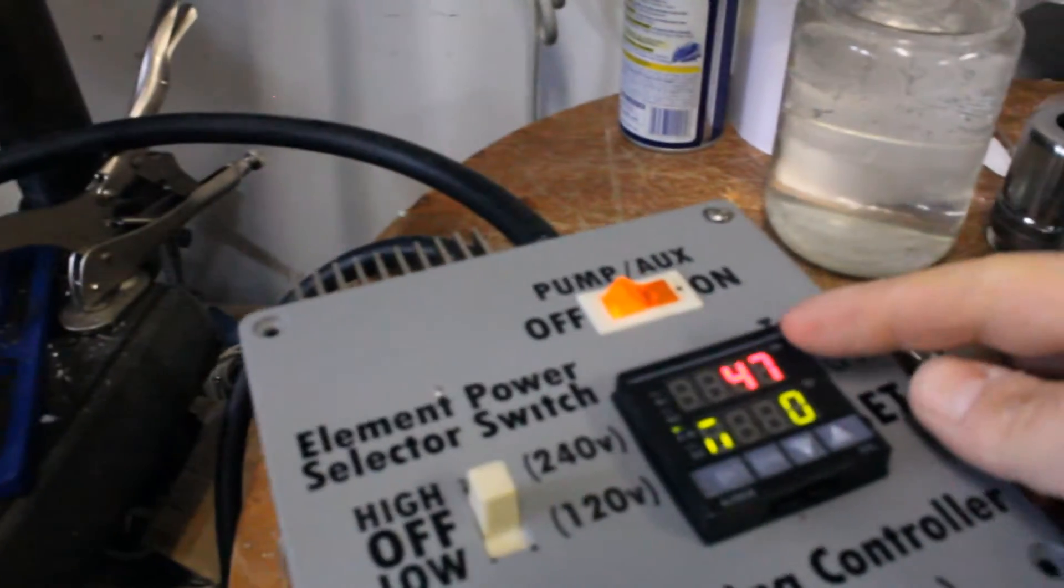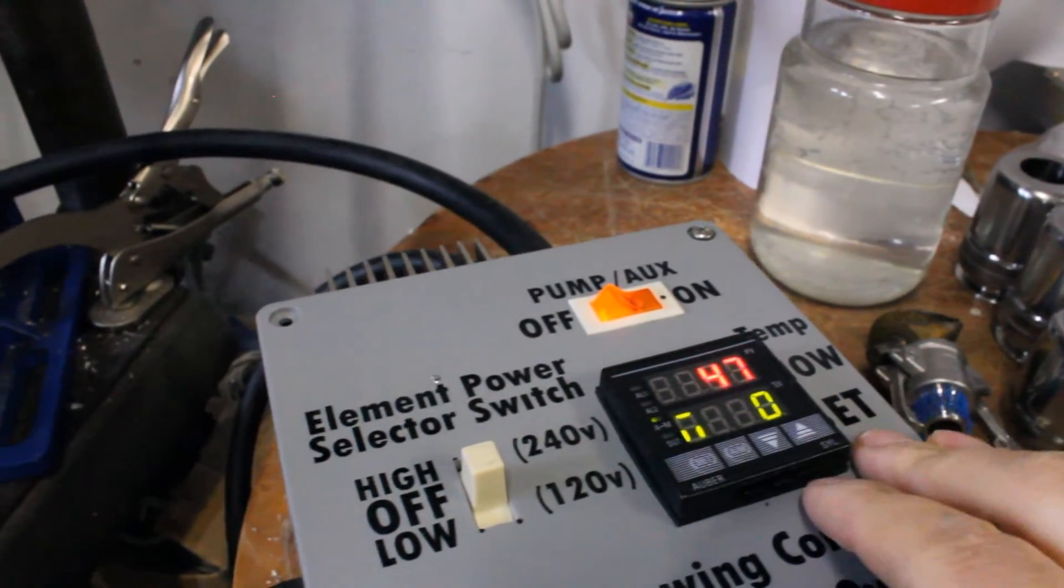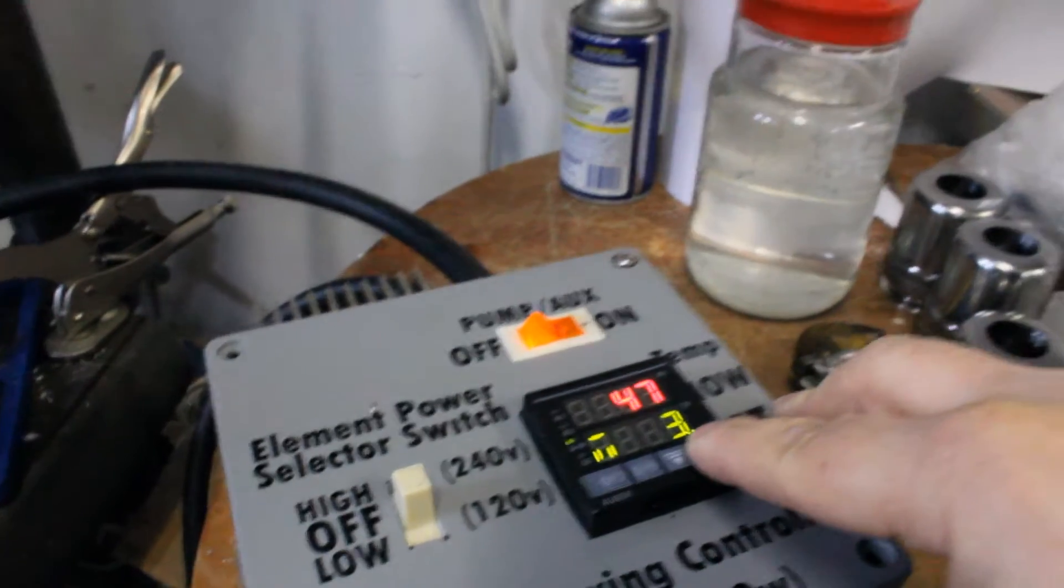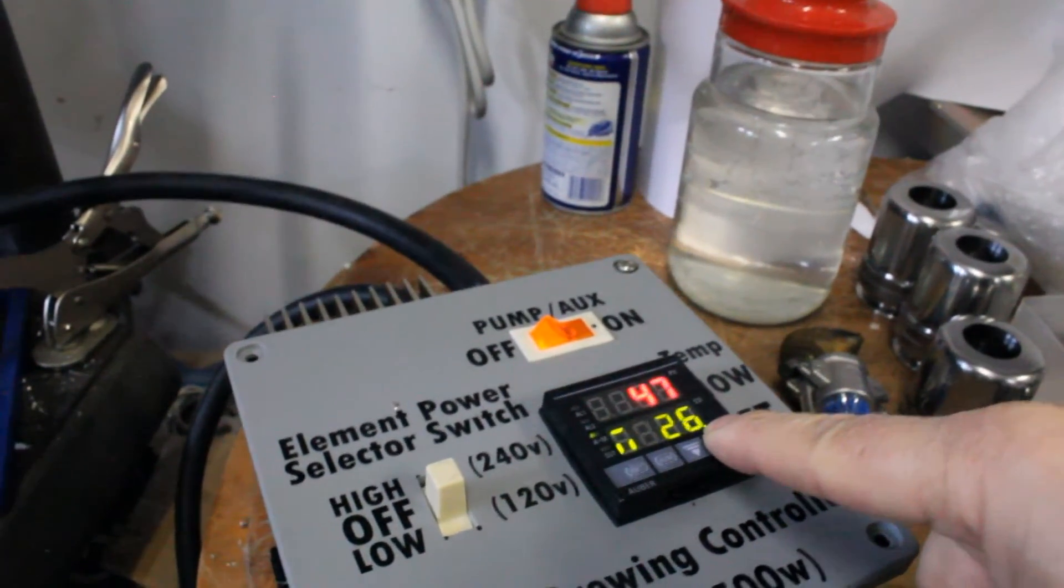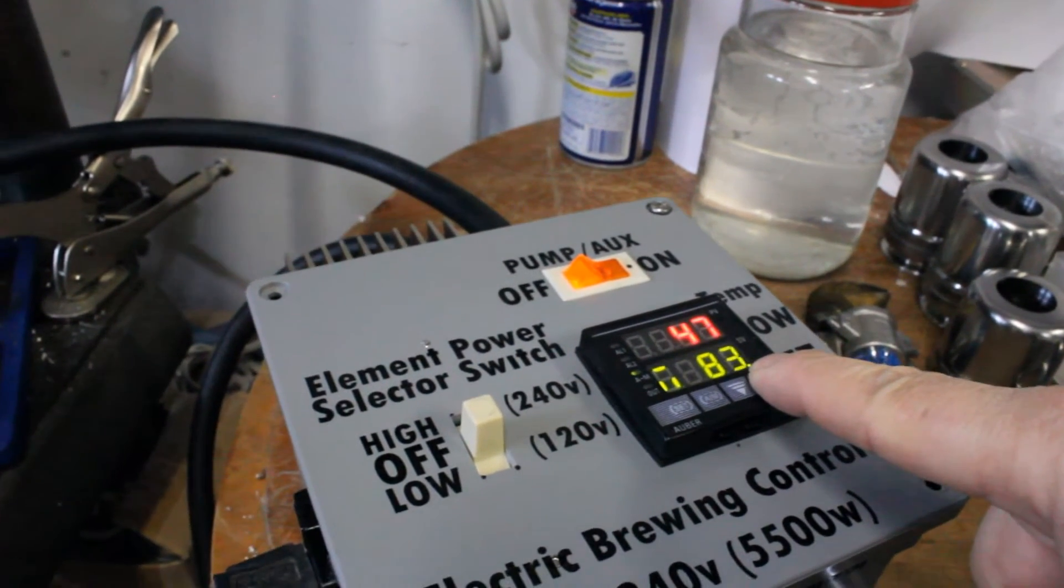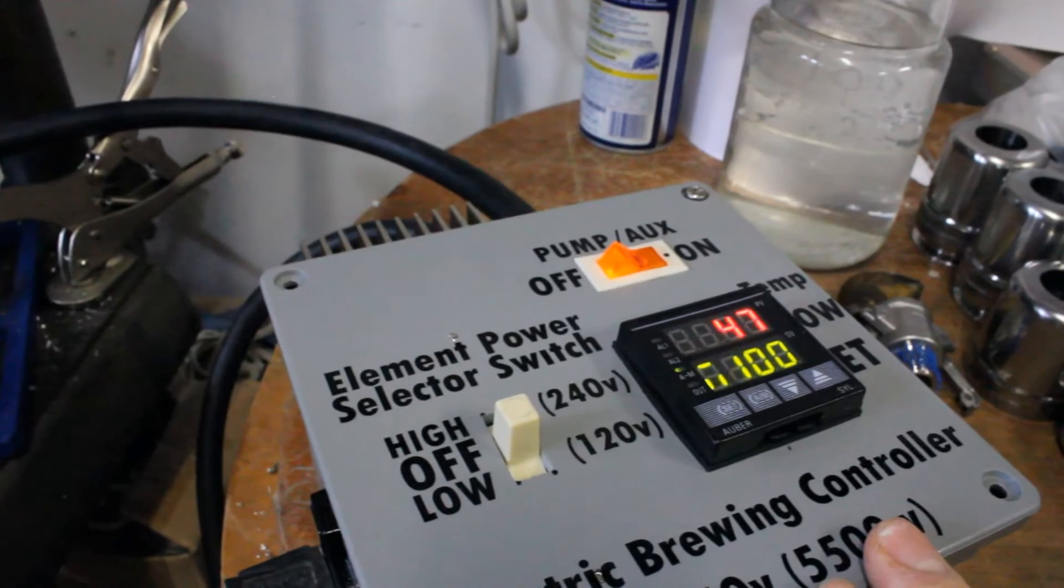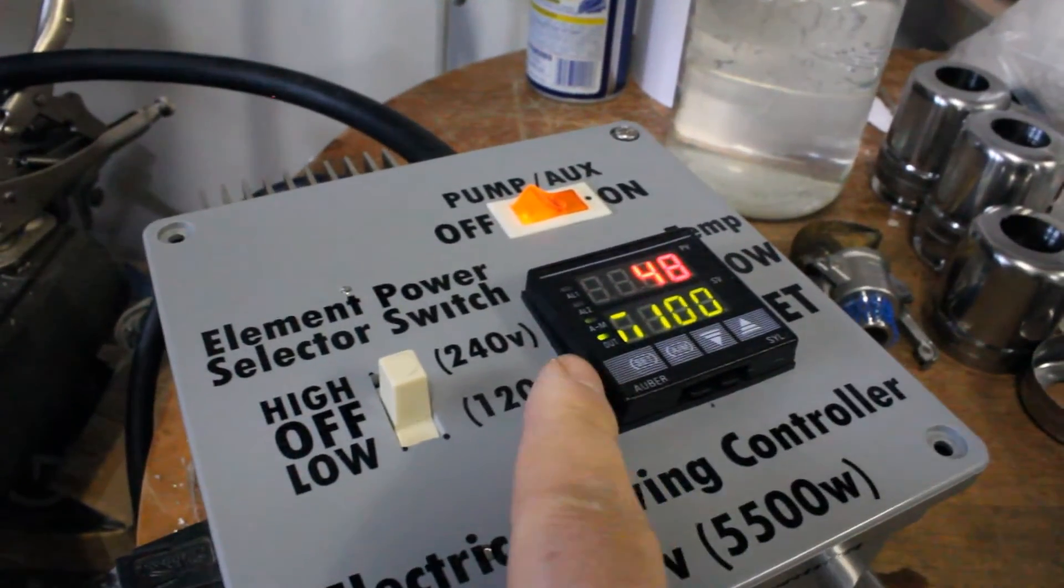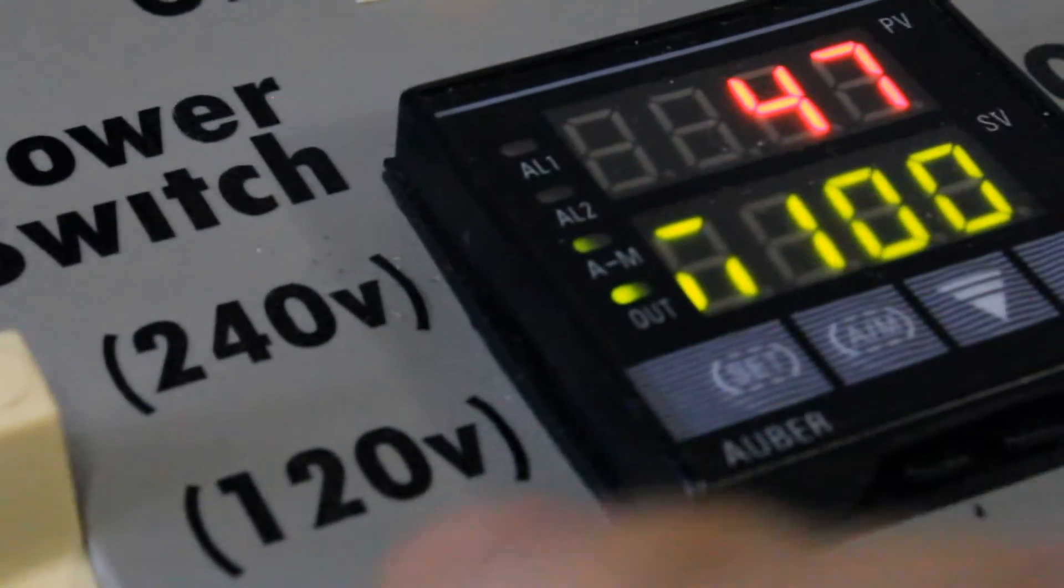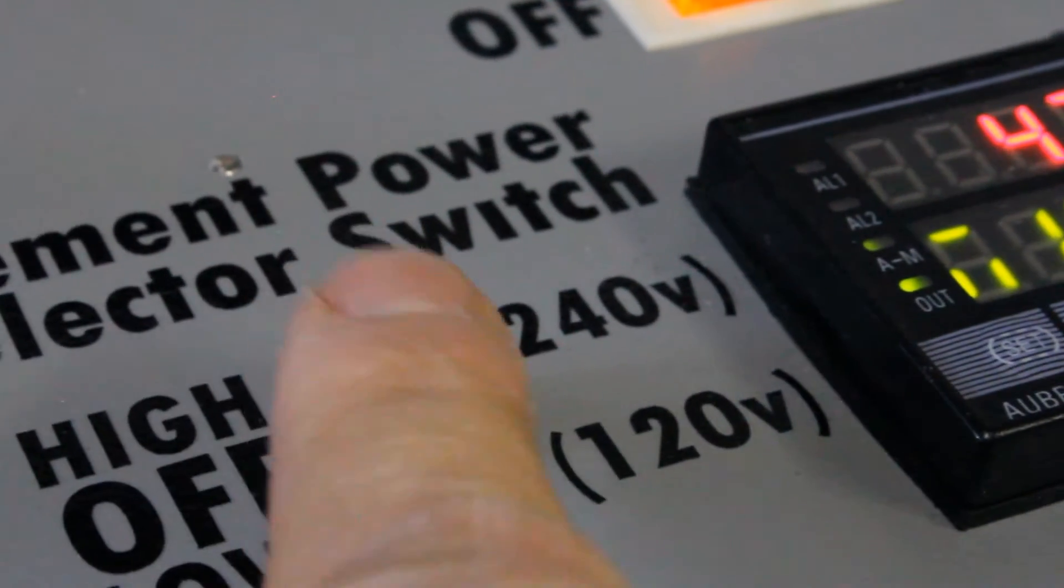Right now the PID is reading the top of the RIMS tube at 47-48 degrees. I put the controller into manual mode and I'm going to set the duty cycle to 100% so that the element will come on and stay on. You'll see now that the output light has turned on solid. Starting now, I'm going to put the switch to 120 volts.